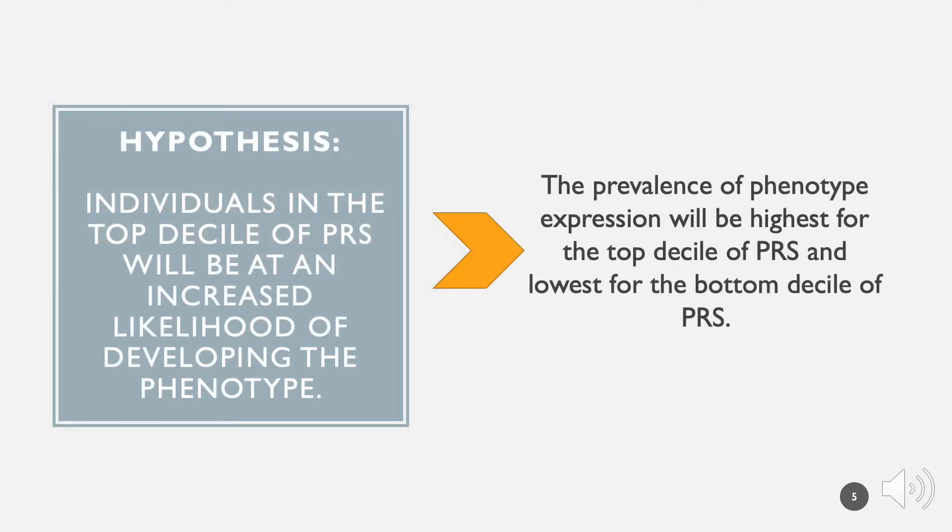Given that PRS sum an individual's phenotype-associated alleles, we hypothesized that subjects in the top decile of PRS distribution would be at an increased risk of developing the phenotype. In other words, the prevalence of a phenotype will be higher for those with higher scores. In our research, we examined hypertension.